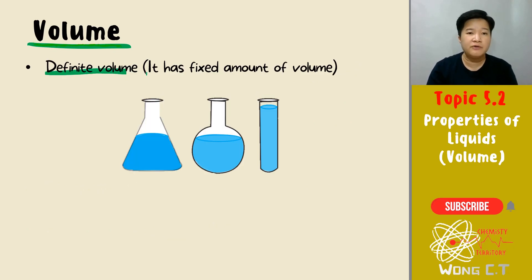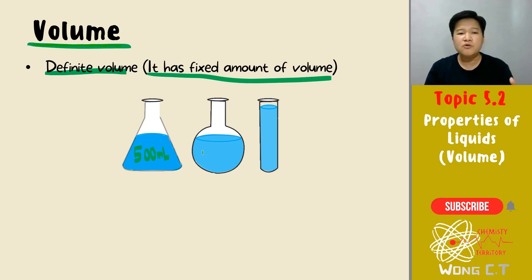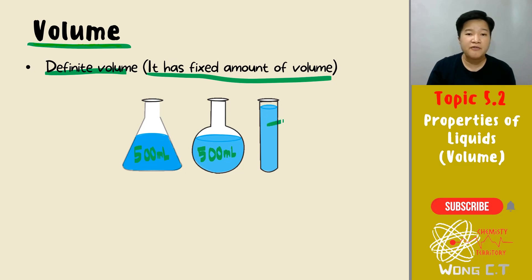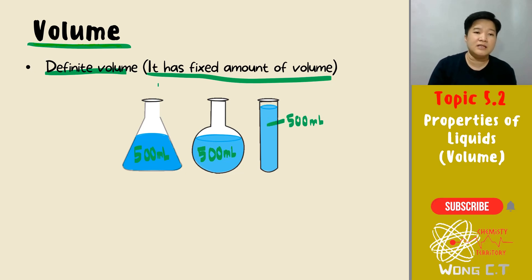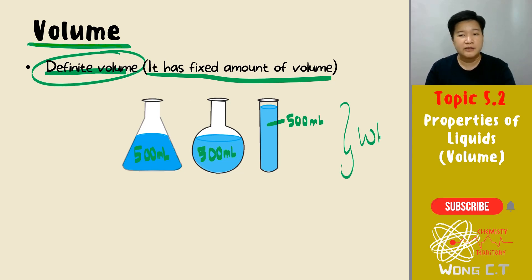Next, let's look at volume. Liquid will have a definite volume — a fixed amount. If you have 500 millilitres of carbonated drink, no matter where you pour it, you will still have 500 millilitres. The volume will not change because the liquid has a definite volume.